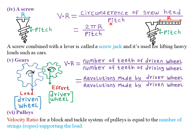We know that the screw head is usually circular in shape. Therefore, we know that the circumference of a circle is given by 2πr or simply πd. Therefore, the velocity ratio shall be given by 2πr divided by the pitch, where r is simply the radius of the head of that particular screw.